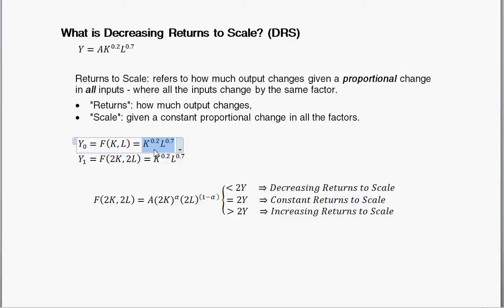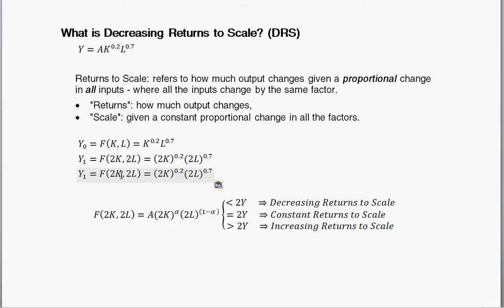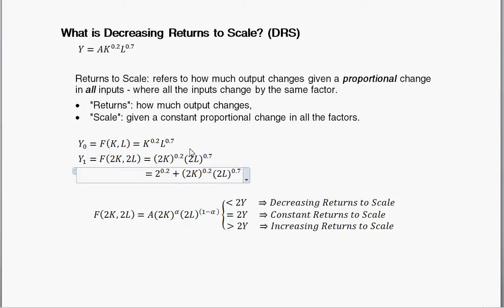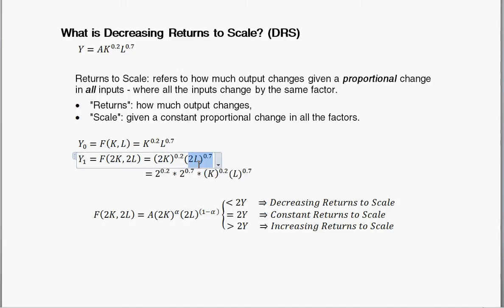Starting off with the production function — this is a parameterized Cobb-Douglas production function. We've doubled capital, so I put a 2 in front of it to show that I've doubled it. We've doubled labor, so I put a 2 in front of that as well. Now let's carry the 2 out to the front: we have 2 raised to the 0.2, and I can remove the 2 in front of capital, and then in front of L we have 2 raised to the 0.7.